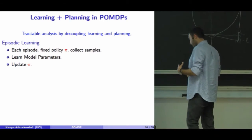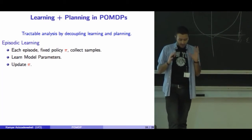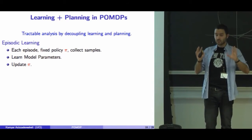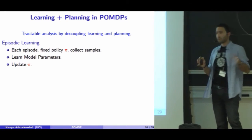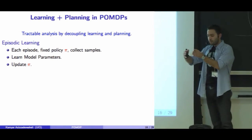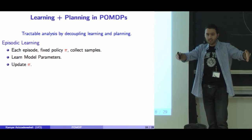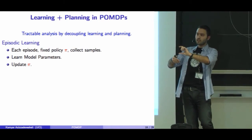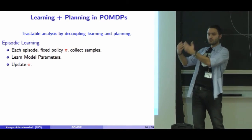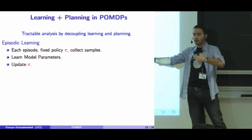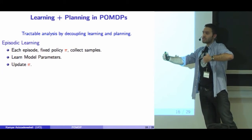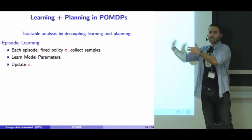Let's walk through the algorithm again. At the beginning, we have a memoryless stochastic policy and apply it to the environment to collect samples. Based on these collected samples, we estimate the model parameters. Based on the estimated parameters and their uncertainty, we come up with a new policy. For the next episode, we apply this policy and stop when the number of samples for at least one action is doubled. We collect these samples, come up with a new policy, and so on.